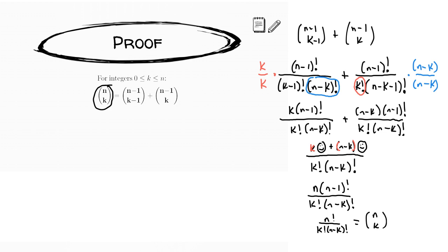That proof is nice because it shows algebraic skill in getting a common denominator and understanding how factorials work, but it doesn't explain to us why this statement is true. That's what a combinatorial proof would do — it would explain the meaning behind N choose K equals N minus 1 choose K minus 1, plus N minus 1 choose K.